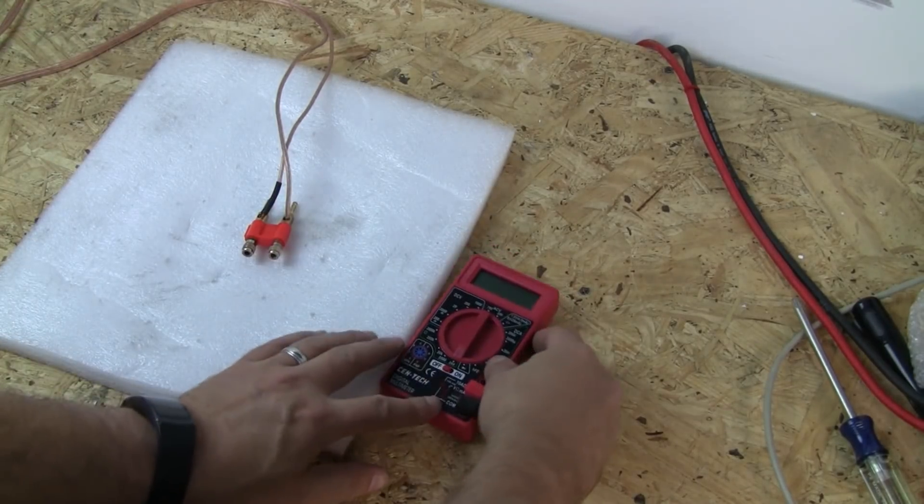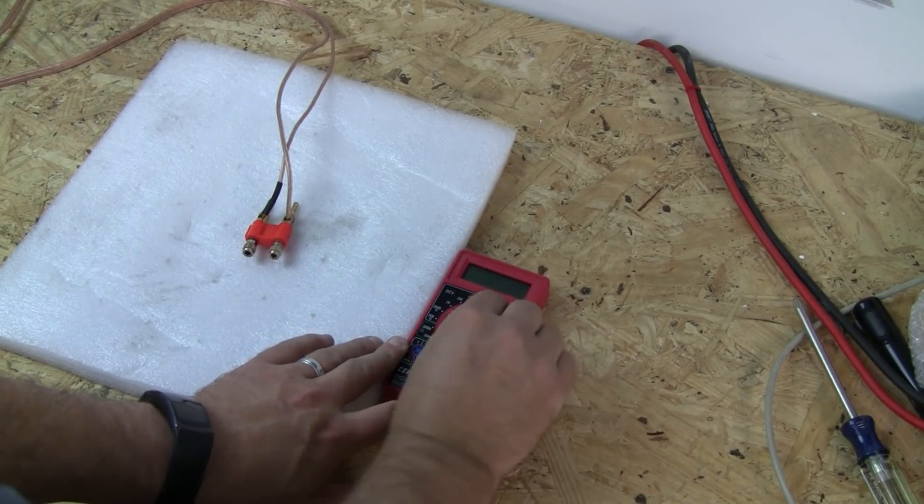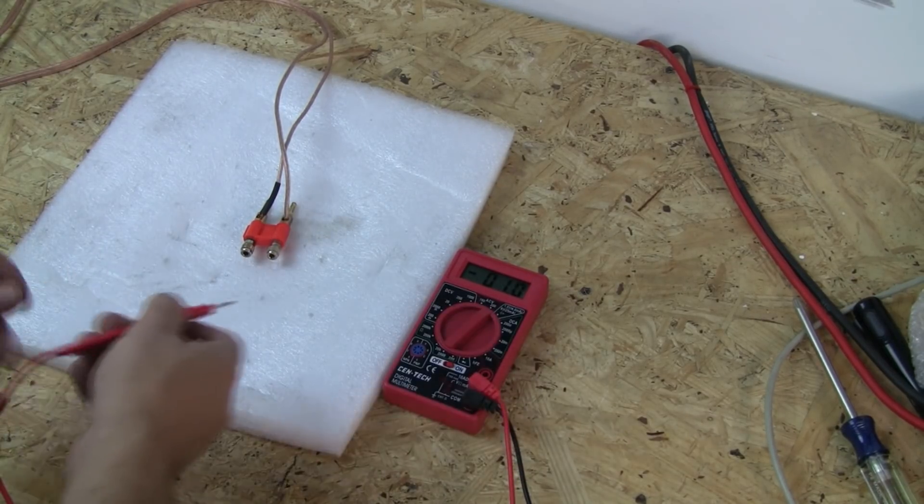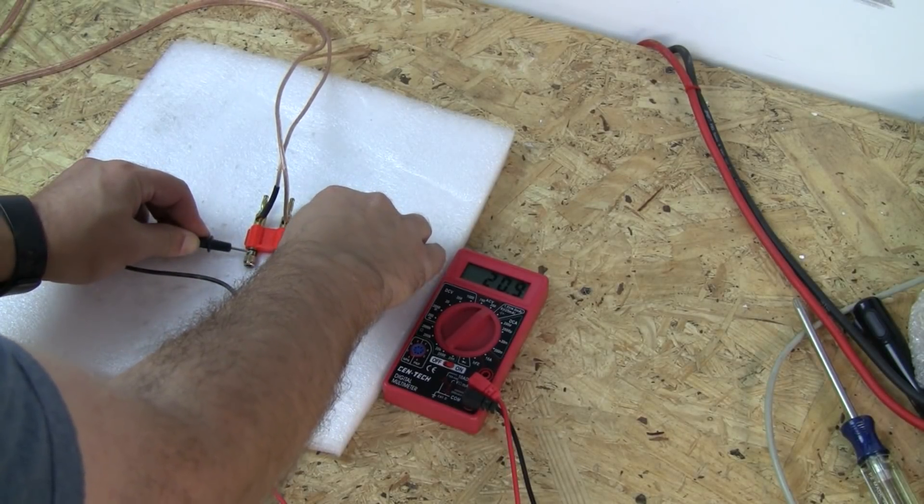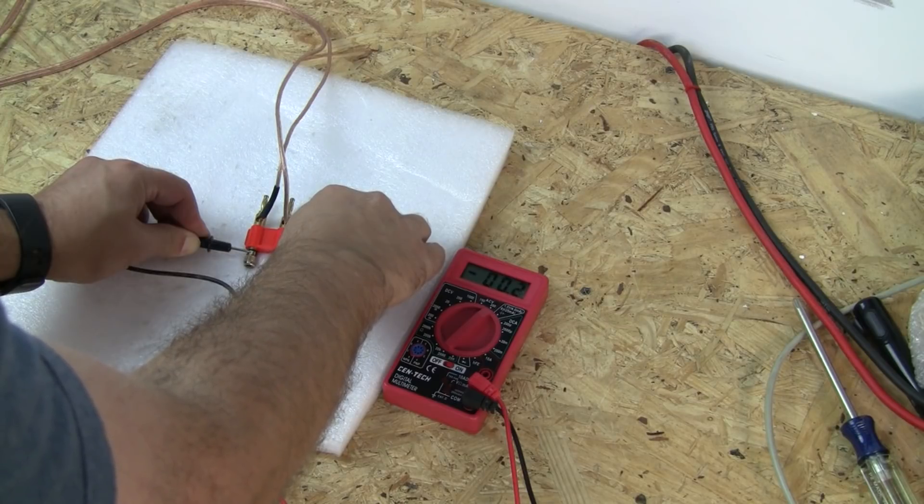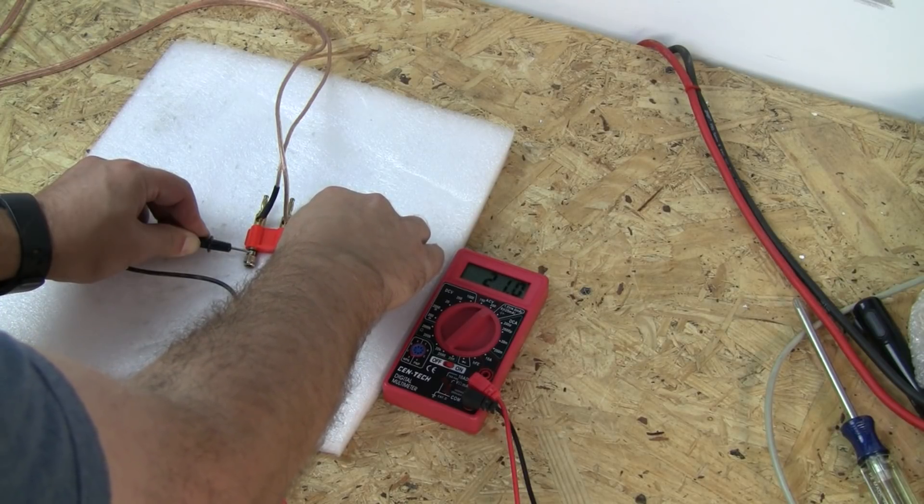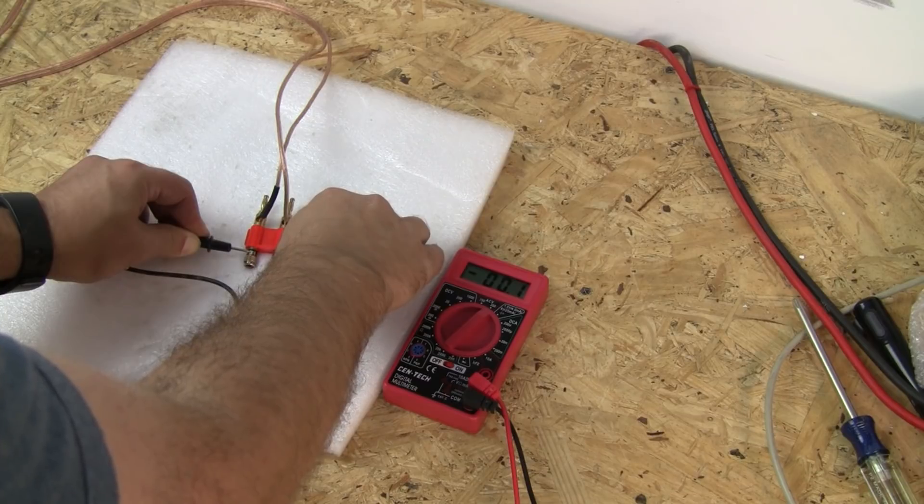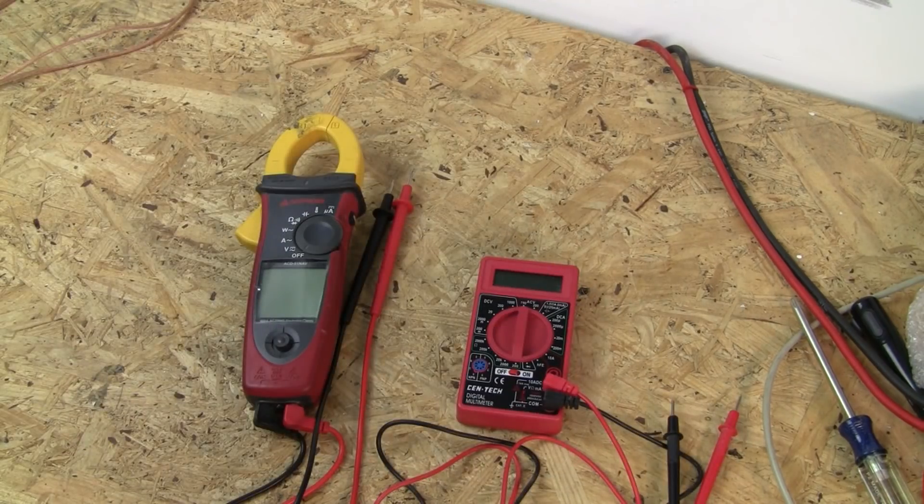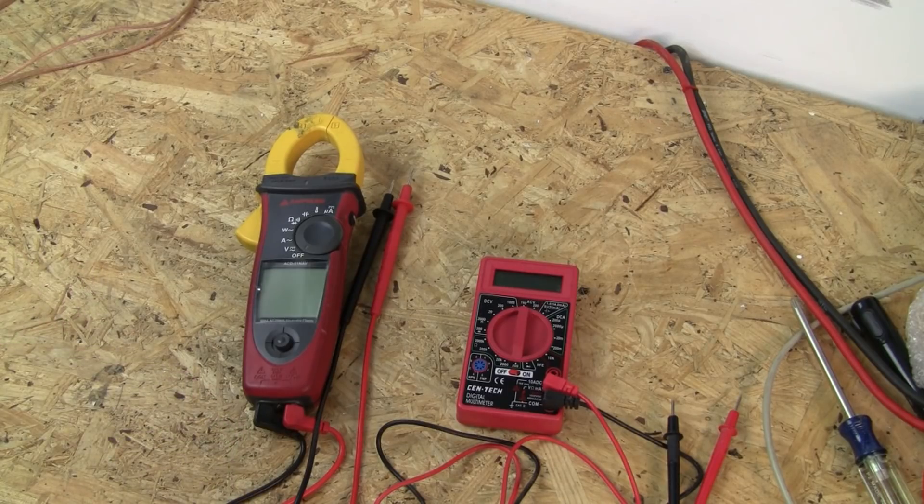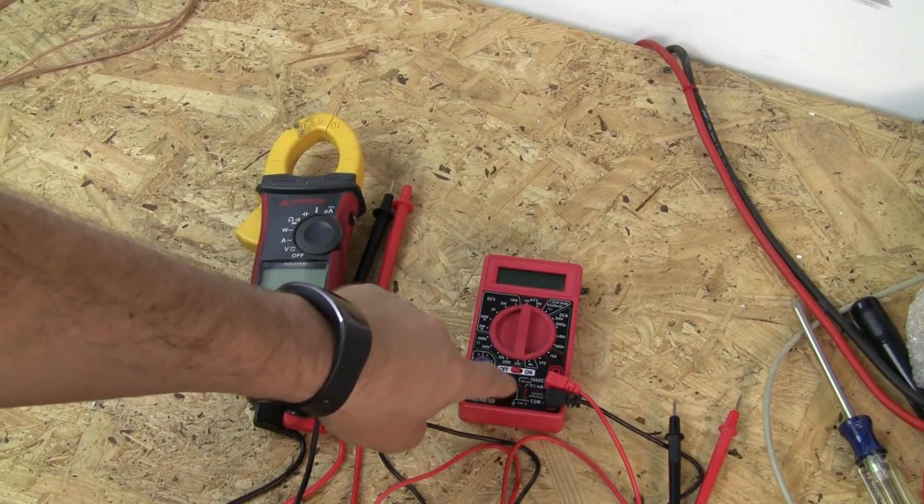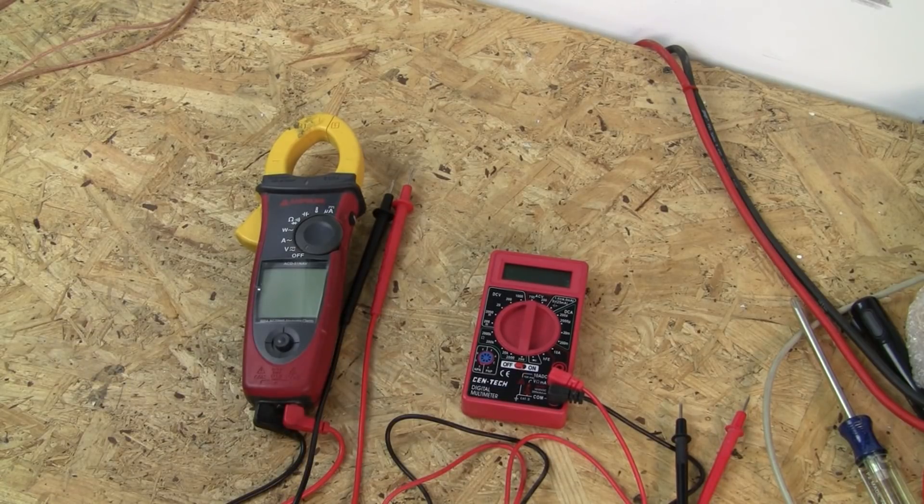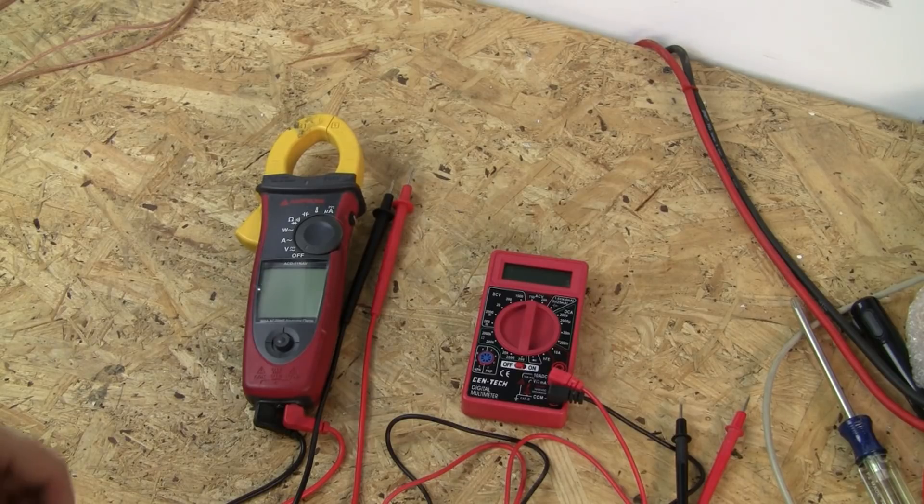And then we have the Centec, which we're going to have to set to 200 volts AC on this one. This one actually says ACV. And we're getting 21.4, 21.6 in that neighborhood. So this one is reading different on AC voltage as well. Three of the meters read very close on impedance and AC voltage and DC voltage. The Centec here did not. Very different on impedance, lower on AC voltage. DC voltage was about the same. So I'm going to show you why and how you can tell if it's going to be inaccurate and explain why.